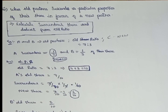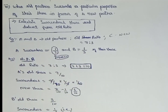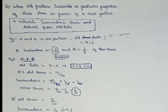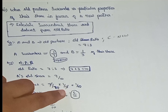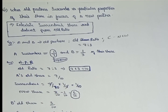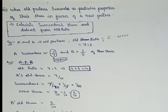A's old share is 7 by 10. A surrenders 1 by 7 proportion, so the surrendered amount is 7 by 10 into 1 by 7, which equals 1 by 10. So A's new share is old share minus surrendered: 7 by 10 minus 1 by 10 equals 6 by 10.